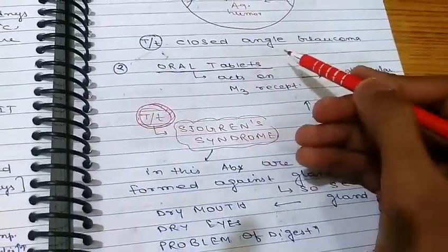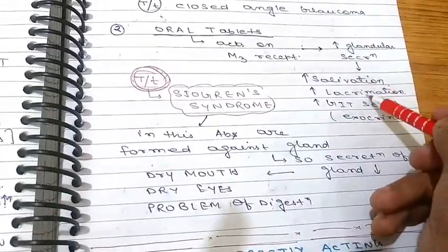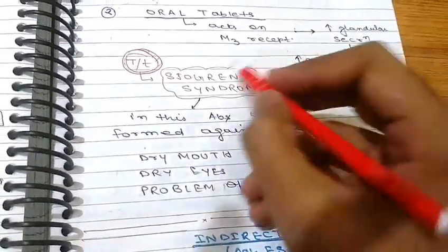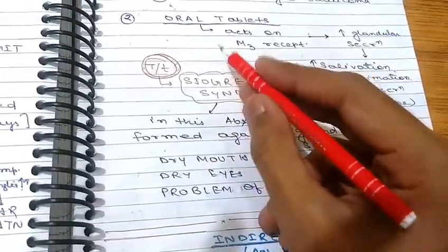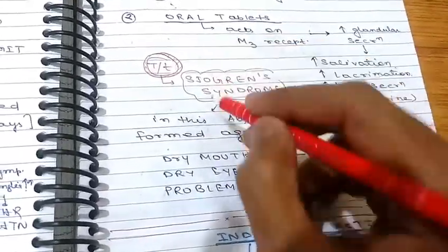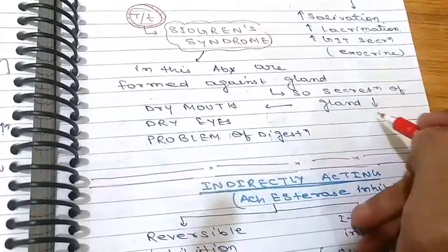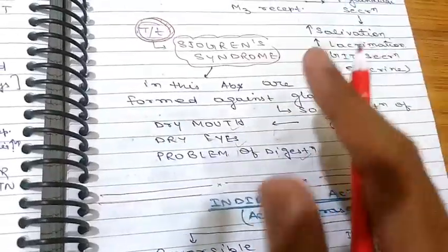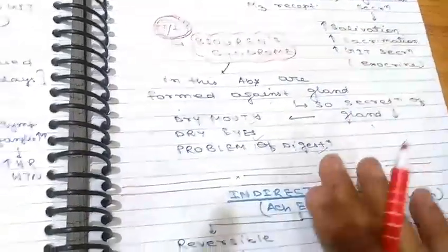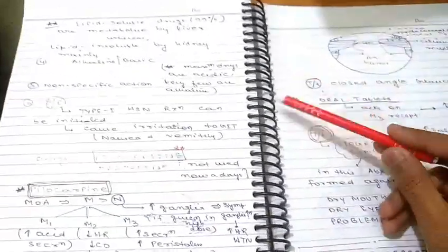Pilocarpine can also be given as an oral tablet; it acts on M3 receptors to increase gland secretion — increased salivation, lacrimation, and GIT secretion. It is given in treatment of Sjögren's syndrome, in which antibodies are formed against glands causing decreased secretion, dry mouth, dry eyes, and related problems. Pilocarpine is given to increase salivation, lacrimation, and GIT secretion.